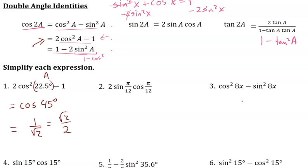For 2 times sine of an angle times cosine of an angle, that matches the sine of 2a identity. So my a is pi over 12, and this equals sine of 2 times pi over 12. Two times pi over 12 is pi over 6, and sine of pi over 6 radians is 1 half.